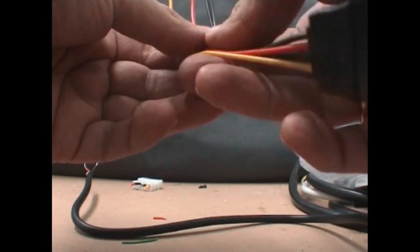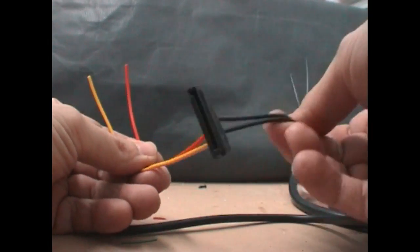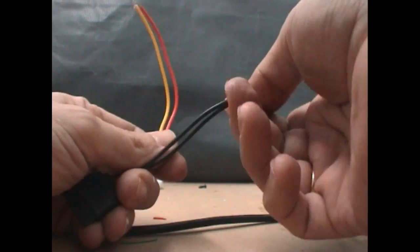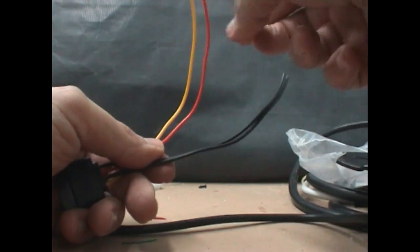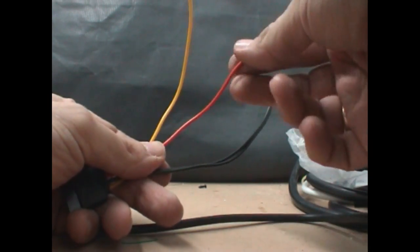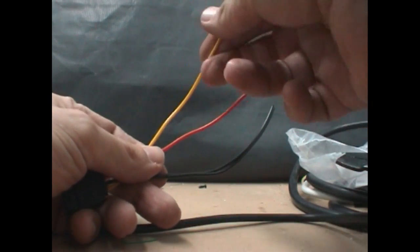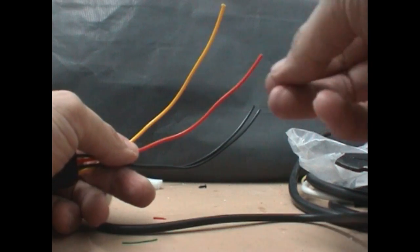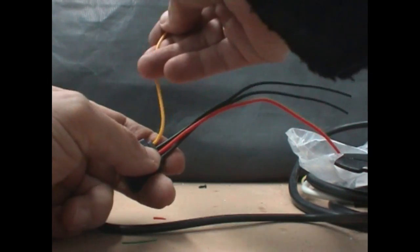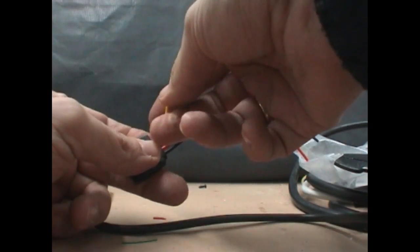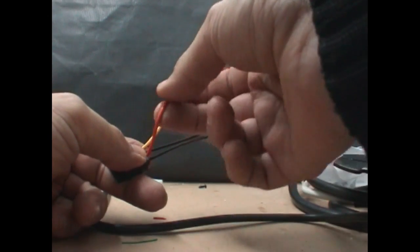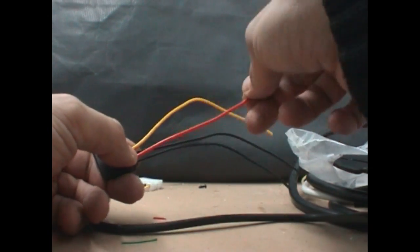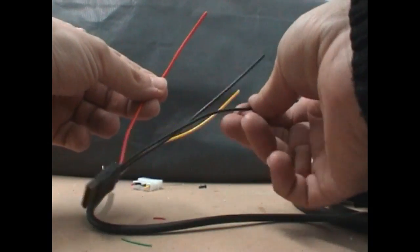We have two blocks - this is the negative or the ground, and this is plus five volts and plus twelve volts. We will only use the red one that is five volts, with the black of course.